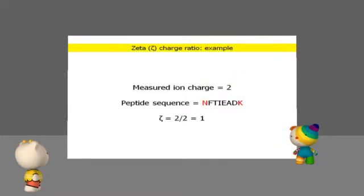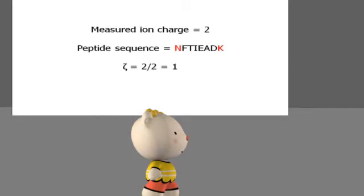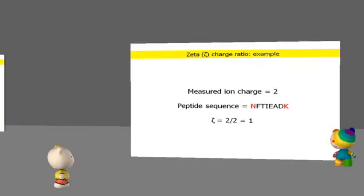In this example, the parent ion charge is measured to be 2, and the canonical charge of the assigned peptide sequence is 2, so the zeta for this ID is 1. Yes, there is a question. Does the n stand for n-terminus or for asparagine? It is an n-terminal asparagine. It probably was not the best choice for this example. Thanks for pointing that out.